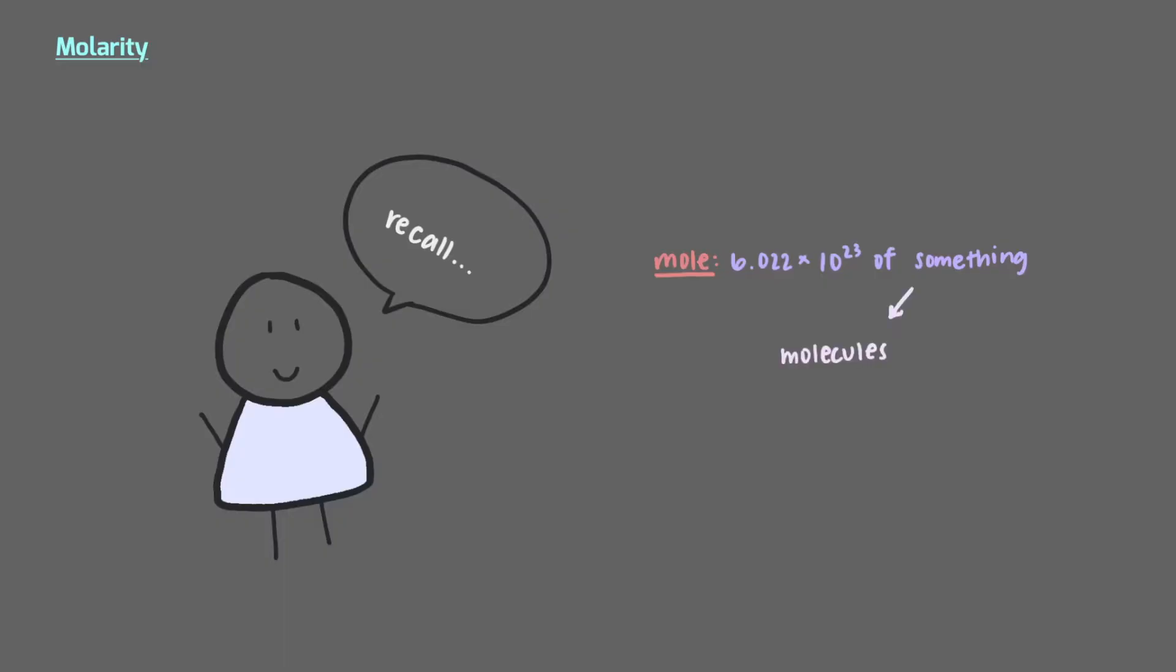In this video, we'll take what we've learned about the mole a step further and apply it to solutions. We've already said that a mole is when we have 6.022 × 10²³ of something. This something can be molecules or atoms or shoes, but not really because that would be way too many shoes.